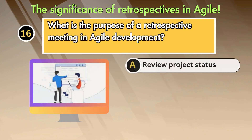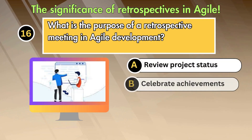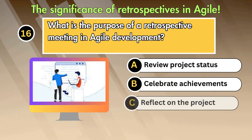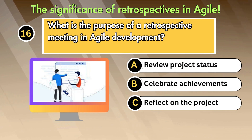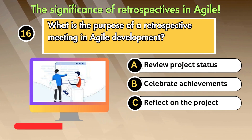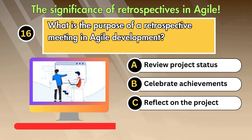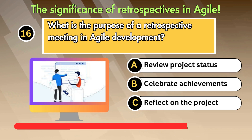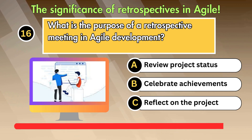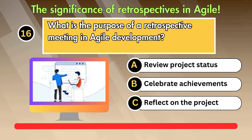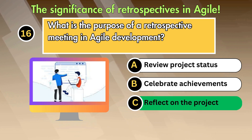What is the purpose of a retrospective meeting in agile development? Option 1: Review project status. Option 2: Celebrate achievements. Option 3: Reflect on the project. Answer is Reflect on the project.